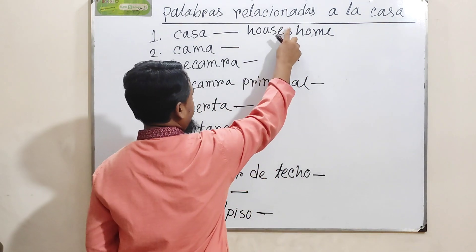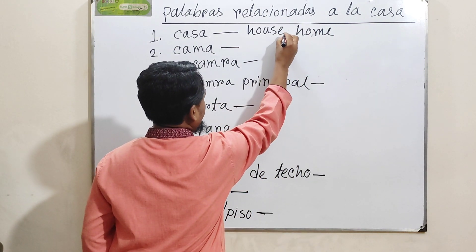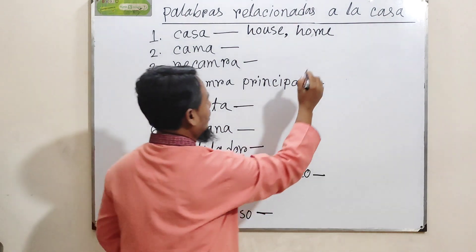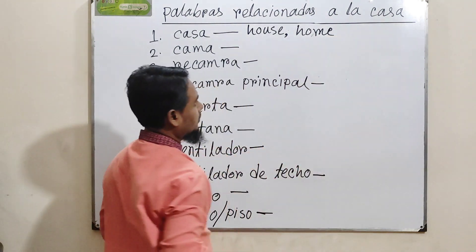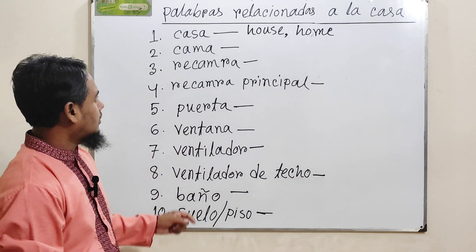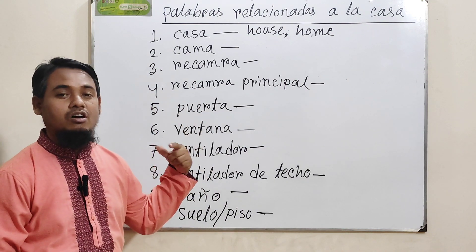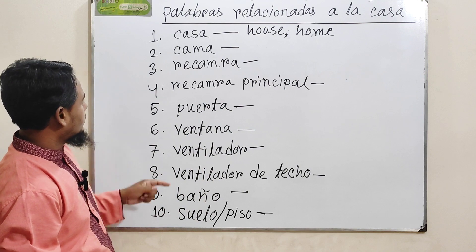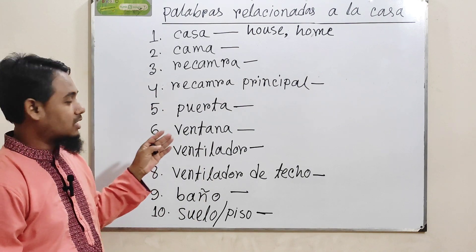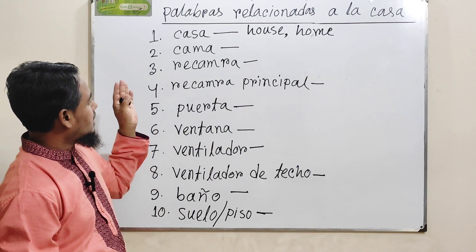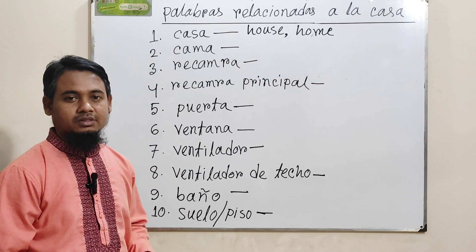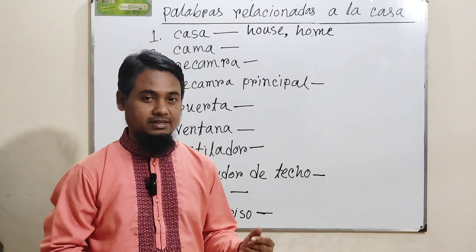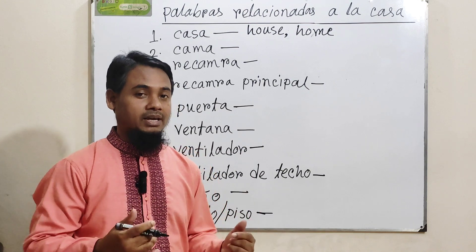Casa means house or home. Número dos: 'cama'. Que significa cama? Cama means 'bed'.